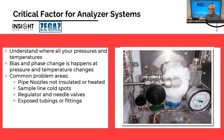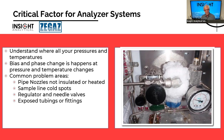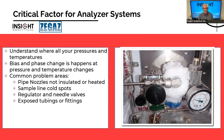We need to understand where we have cold spots in our systems because all our biases and phase changes happen at pressure and temperature changes. Common places include pipe nozzles that aren't insulated or heated, sample lines that have cold spots — such as the last six inches left bare outside or in an analyzer shelter — regulators and needle valves where anything that drops pressure can cause Joule-Thomson cooling, and exposed tubing and fittings where the probe tip comes out unheated. Cold spots are going to really affect our dew point measurements.